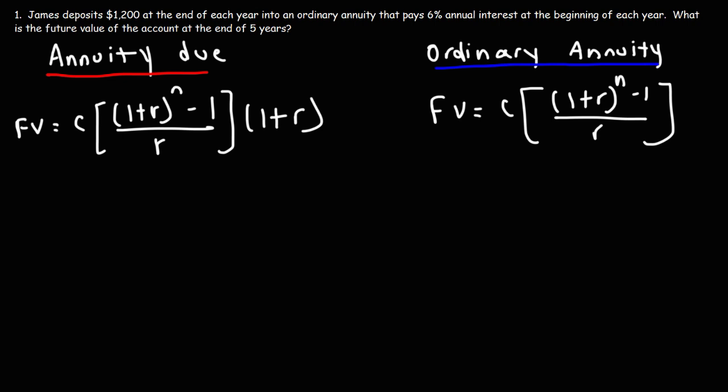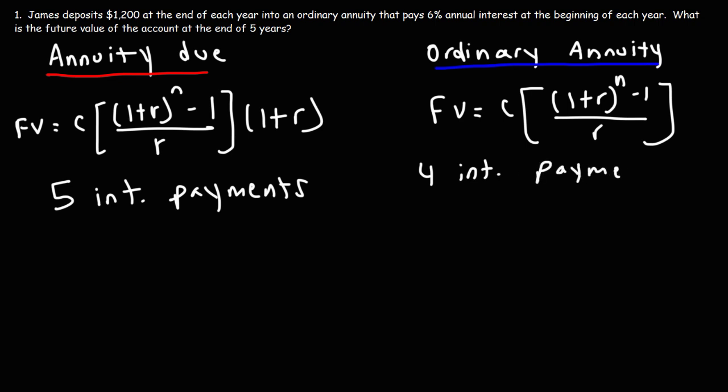For this example, in which there are 5 years — so n represents the number of years, there are 5 time periods — the annuity due value will be greater because there are going to be 5 interest payments made to the account, whereas for the ordinary annuity there are going to be 4 interest payments. With the annuity due, you make the deposits into the account before interest is credited, whereas in an ordinary annuity, the deposit is made at the end of the period — that is, after interest is credited.